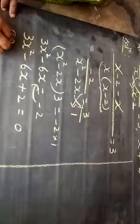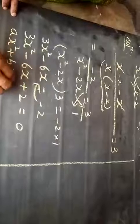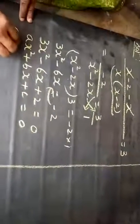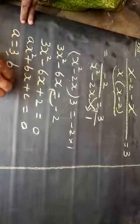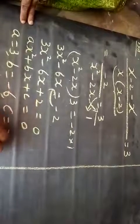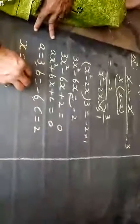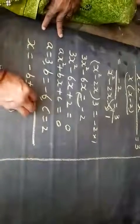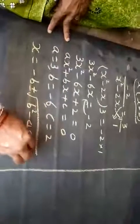This is now in the standard form ax squared plus bx plus c equal to 0. The value of a is 3, the value of b is minus 6, and the value of c is 2. The quadratic formula is: x equals minus b plus or minus root of (b squared minus 4ac) divided by 2a.